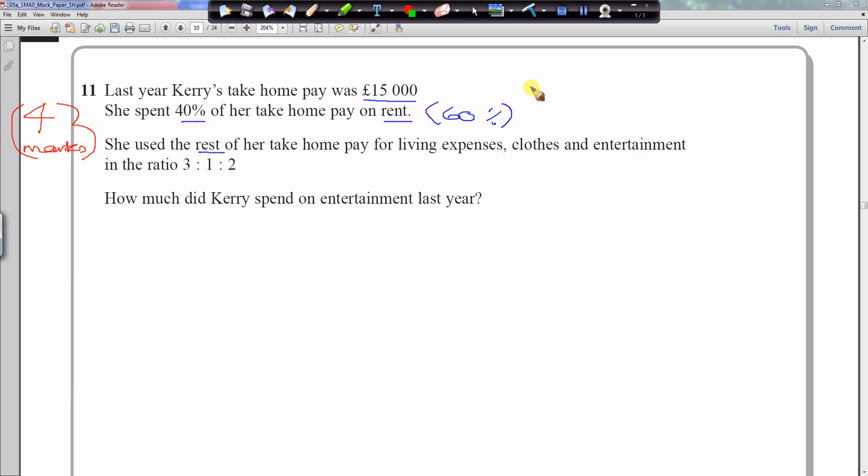She used the rest of her money for home pay, living expenses, clothes, and entertainment in the ratio 3 to 1 to 2. Let's call it A for living expenses, B for clothes, and C for entertainment. How much did Kerry spend on entertainment last year? Entertainment is the C part. That's why we're interested in this question.